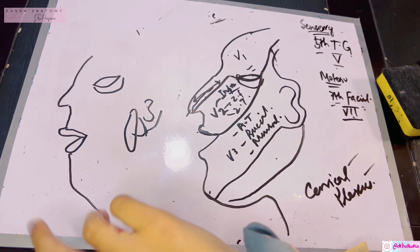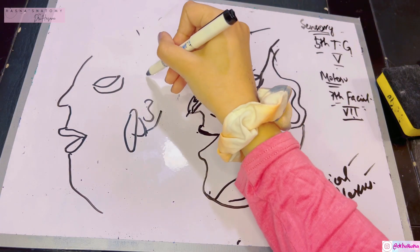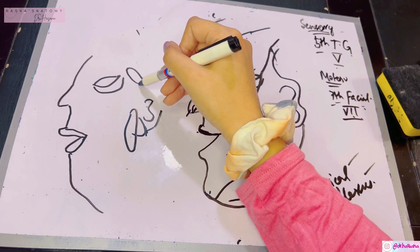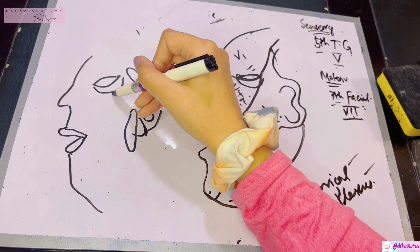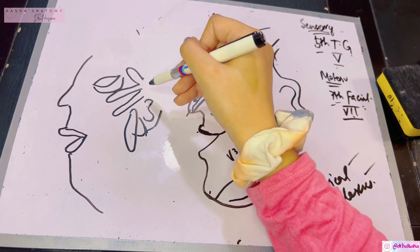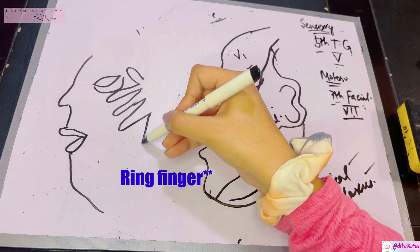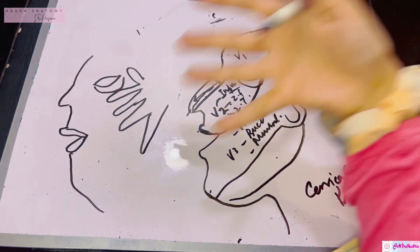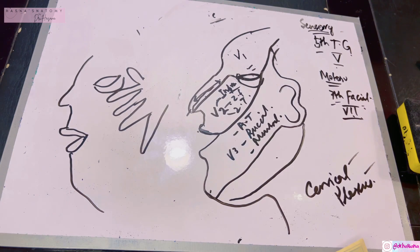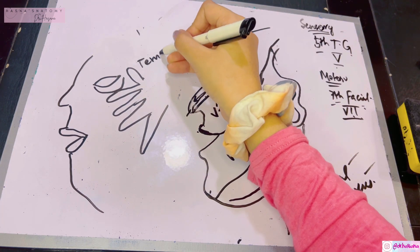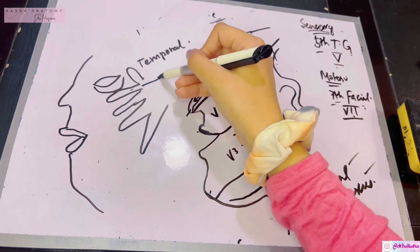Put your thumb pointing towards the temporal region, your index finger on the zygomatic bone, middle finger pointing towards the upper lip, ring finger pointing towards the lower lip, and finally your pinky finger will naturally go towards your neck.